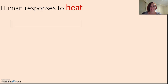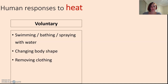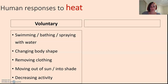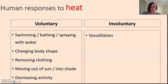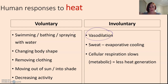The human response to heat includes voluntary responses like behavioral changes — changing body shape by spreading out, removing clothing, decreasing activity, and moving out of the sun into shade. Involuntary responses include vasodilation (widening of blood vessels), evaporative cooling through sweat, and cellular respiration slowing down to generate less heat. Vasomotor control refers to that dilation and constriction of blood vessels, changing how much evaporative heat loss is happening.